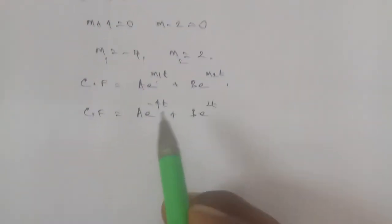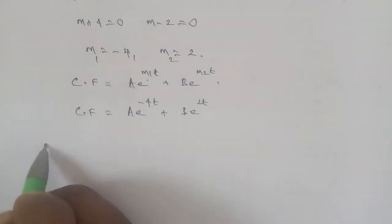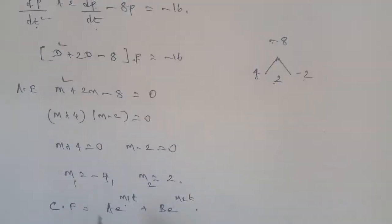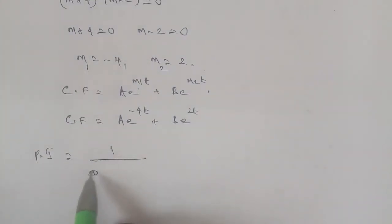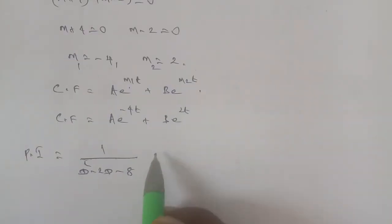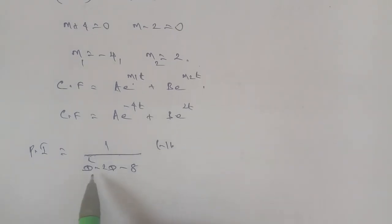For the particular integral, PI is equal to 1 divided by the given function. Here we apply the reciprocal: 1 over (d² + 2d - 8) applied to minus 16.